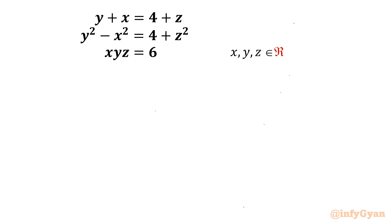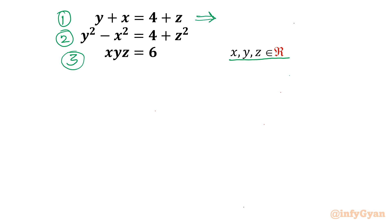Welcome back to Infigyan my dear friends. In this video we are going to take up one very interesting system of equations. We have three equations: y plus x equals 4 plus z; y squared minus x squared equals 4 plus z squared; and the third equation is xyz equals 6, where x, y, z are real numbers. Let's get started by writing the equation numbers and then rearranging equations 1 and 2.